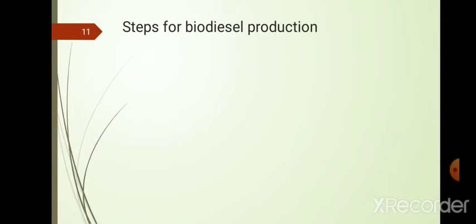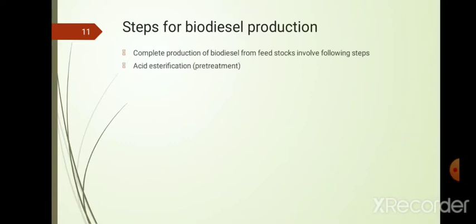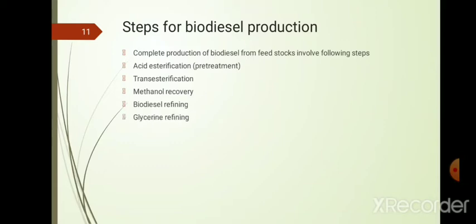The different steps in biodiesel production are: acid esterification (a pre-treatment before transesterification), transesterification (the main step), methanol recovery, biodiesel refining, and glycerin refining.